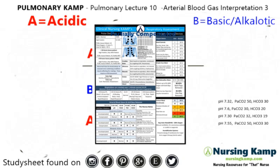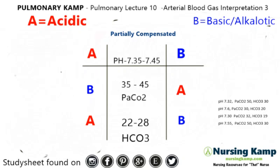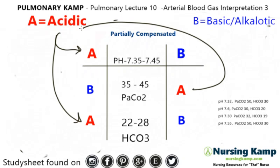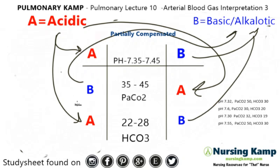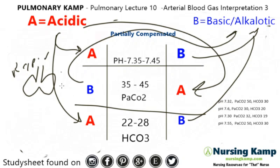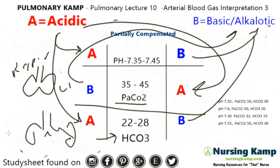Let's get into it. In the previous lecture, we talked about how ABG interpretation is done through the ABBABAD method — that's the best and easiest interpretation I find. The A stands for acidic and the B stands for basic or alkalotic. Then we have two sections: the lungs, which is respirations and the PaCO2, and the lower area which is the kidneys — the HCO3, or your metabolic area.